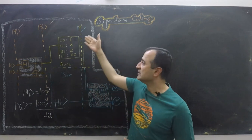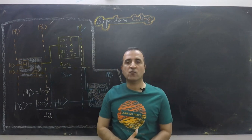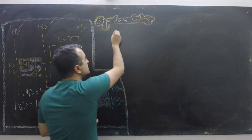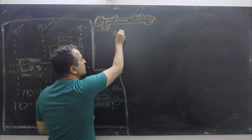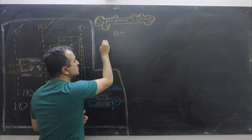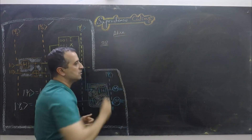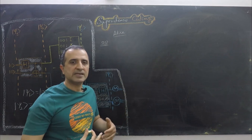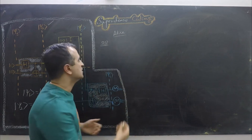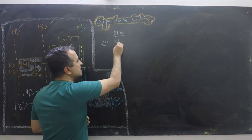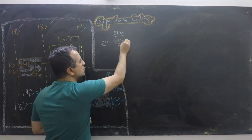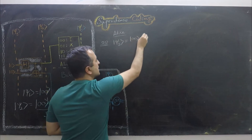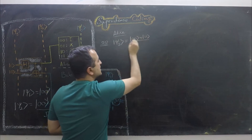The ket psi 3 stage depends upon what Alice wishes to send to Bob. If Alice wishes to send 00, then Alice will do no operation on her portion of the Bell state and send it as it is to Bob. In that case, ket psi 3 equals ket psi 2, which is (|00⟩ + |11⟩) / √2.